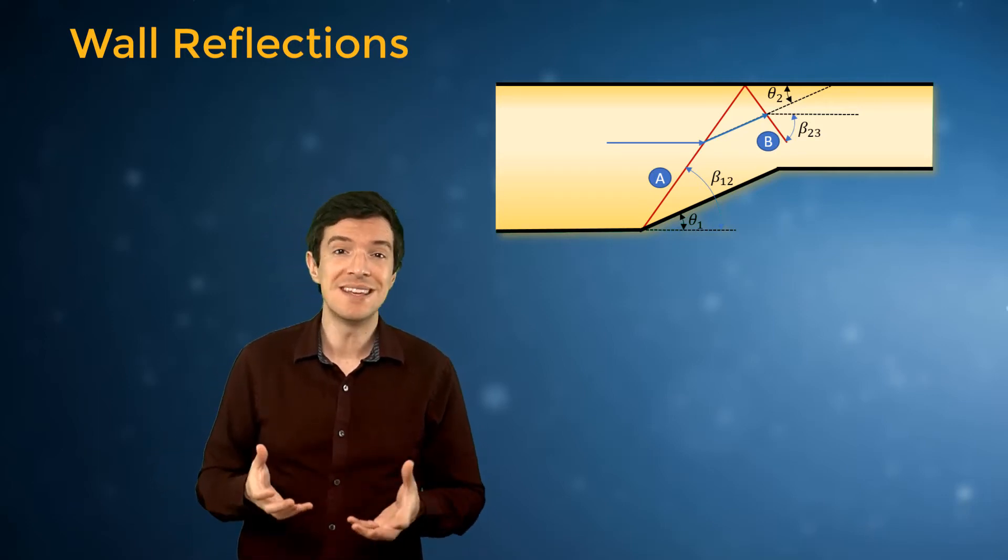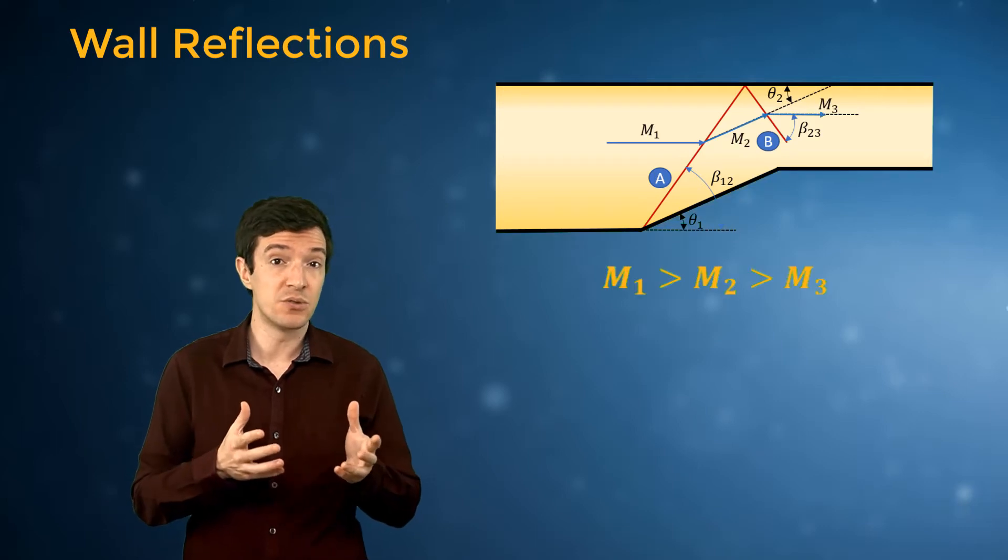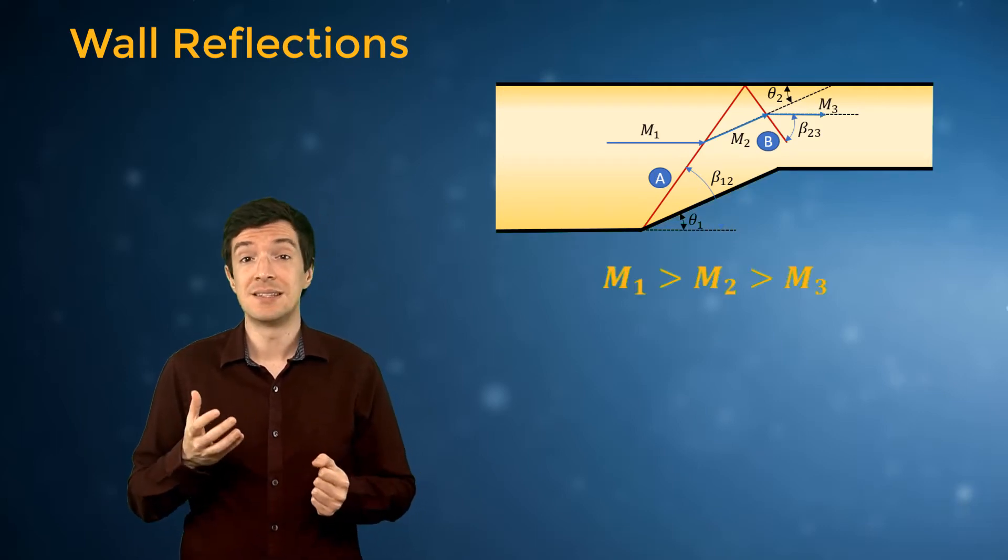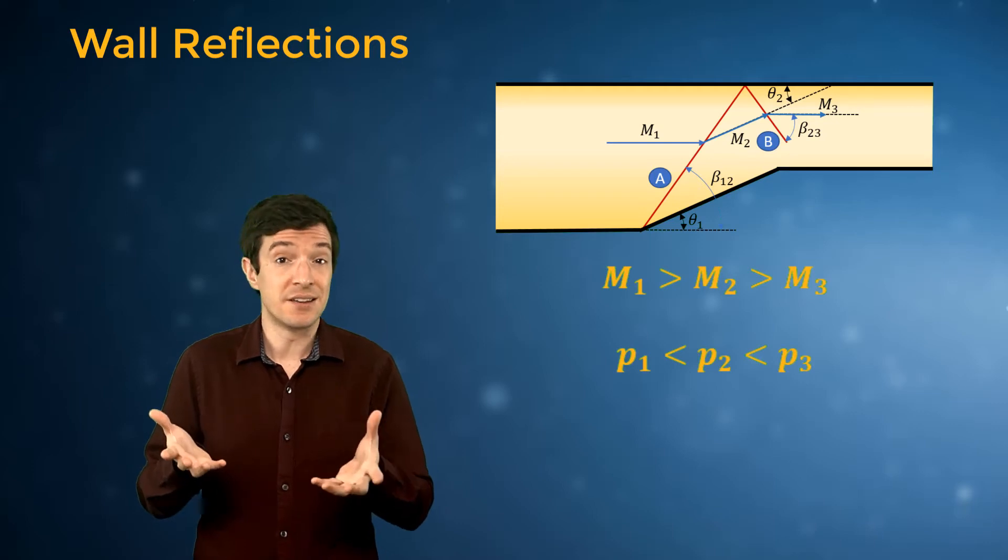The Mach number decreases as we move from Region 1 to Region 3. The static pressure, on the other hand, increases.